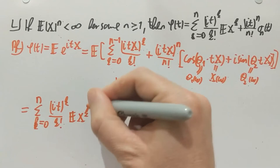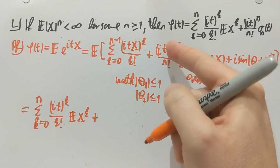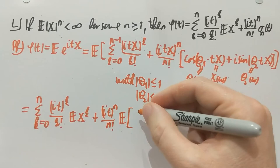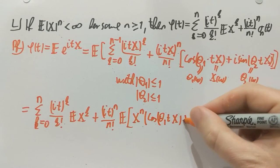Then the expectation hits the kth power of x. And then the expectation also hits this error term. So the error term has some non-random parts to it. It to the n over n factorial. And then I need to look at the expectation of x times, in fact x to the n times, this cosine of theta one tx term, and then i sine of theta two tx term.